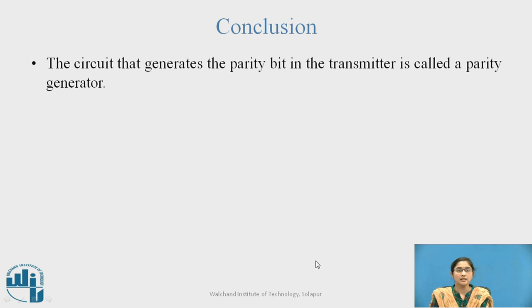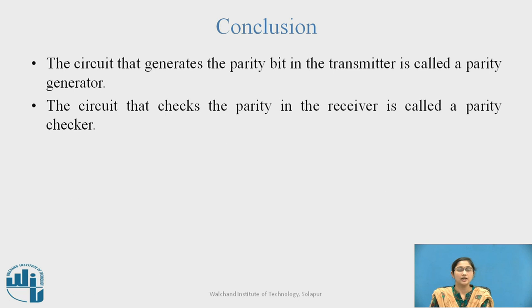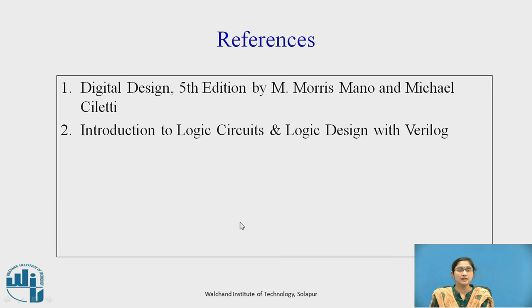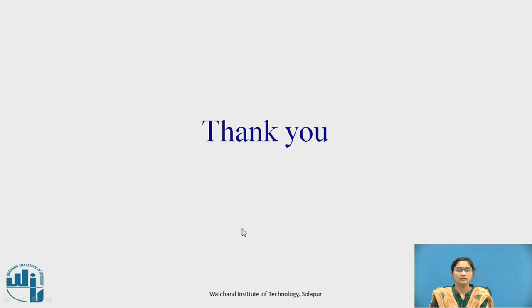Conclusion: The circuit that generates the parity bit in the transmitter is called the parity generator. The circuit that checks the parity in the receiver is called the parity checker. A parity bit is an extra bit included with the binary message to make the number of ones odd or even, used for detecting errors during the transmission of binary information. Thank you.